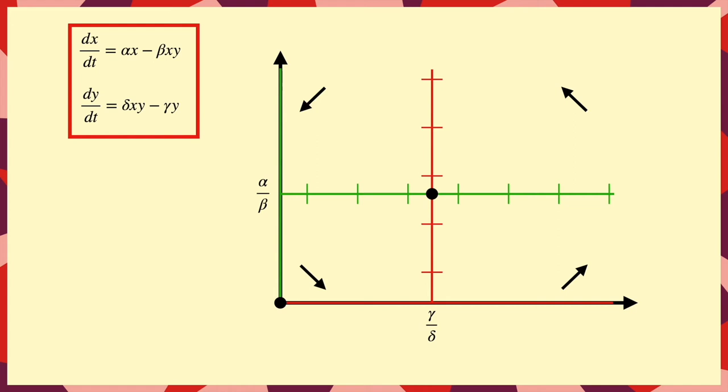And then finally, we can draw some trajectories, making sure that the two stationary points look like a saddle and a centre.